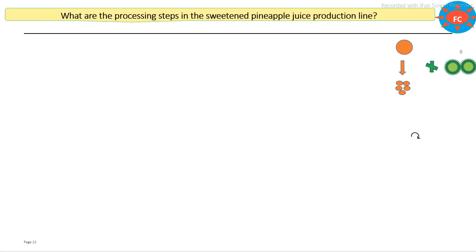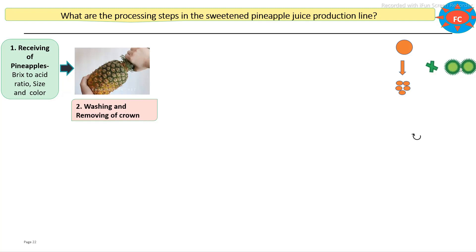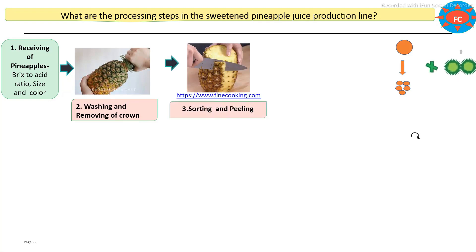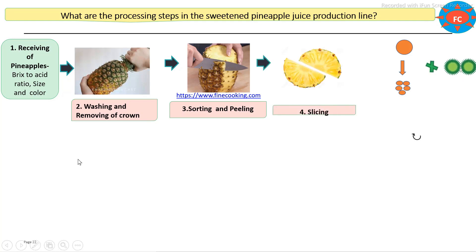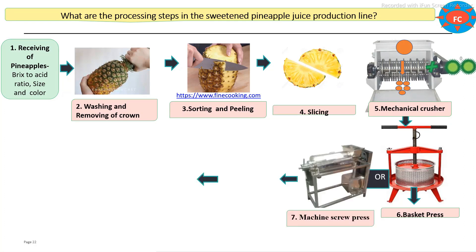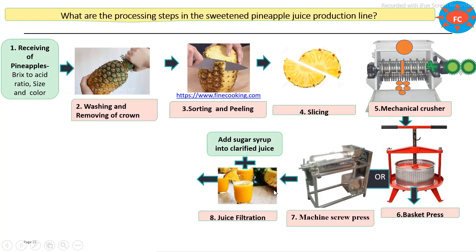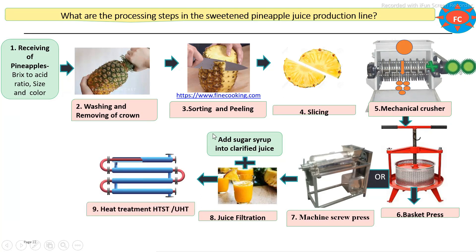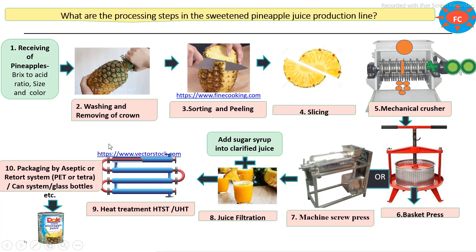The main steps involved in the production of sweetened pineapple juice: first, receiving of pineapples — properly matured and ripe pineapples are received to get a high yield of final juice with high quality. During receiving, the sugar-acid to Brix ratio is checked. Pre-processing steps involve removing the crown, washing, sorting, peeling, and slicing. After slicing, the mechanical crushing and size reduction process follows. Then a basket press is used to extract the juice content. In some industries, mechanical screw press expellers are used. After juice extraction, clarification is carried out, then standardization by addition of sugar syrup with additives. After proper mixing of ingredients, heat treatment is applied — stabilization by high temperature short time (HTST) or ultra high temperature (UHT) processing. Finally, packaging is done.